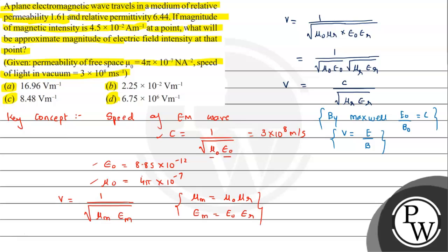We can see that v = E/B, and combining with the refractive index relationship where n = c/v = √(μᵣ εᵣ), we get the expression: E = B × c / √(μᵣ × εᵣ). Here we need to be careful — the value given is the magnetic intensity H, not the magnetic field B.